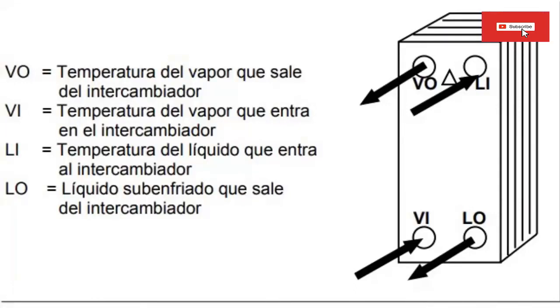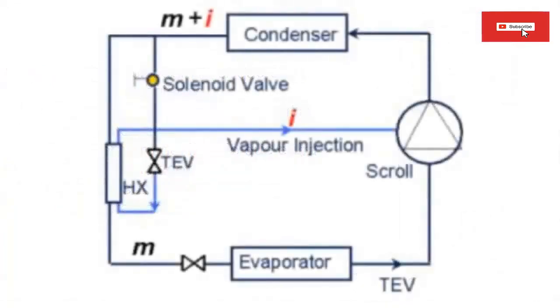27. The liquid refrigerant piping between the economizer and the evaporator should be insulated and kept as short as possible to minimize heat gain. 28. The steam injection pipe connecting the exchanger to the compressor must be three-eighths to a half inch in diameter.